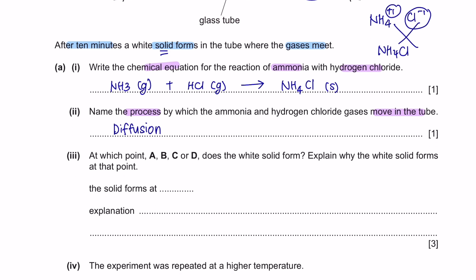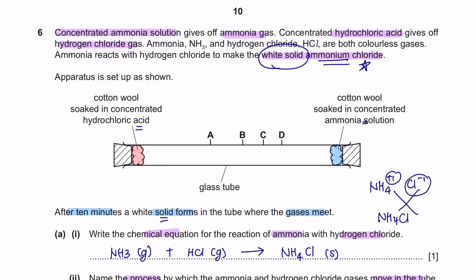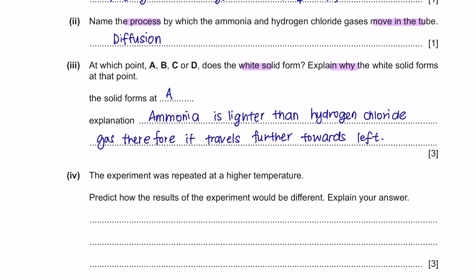Next, part 3. At which point ABCD does the white solid form? Explain why the white solid forms at that point. Okay, so we have gone through this experiment in the theory part previously. We know that diffusion is affected by two factors and one of them is the mass. If they are lighter, it means that they can travel a further distance compared to the heavier molecule, which can only travel a shorter distance because they are heavier. So, when the two compounds meet and react, the smoke will form over here which is at A. So, you can say that ammonia is lighter than hydrogen chloride gas, therefore, it travels further towards the left side.